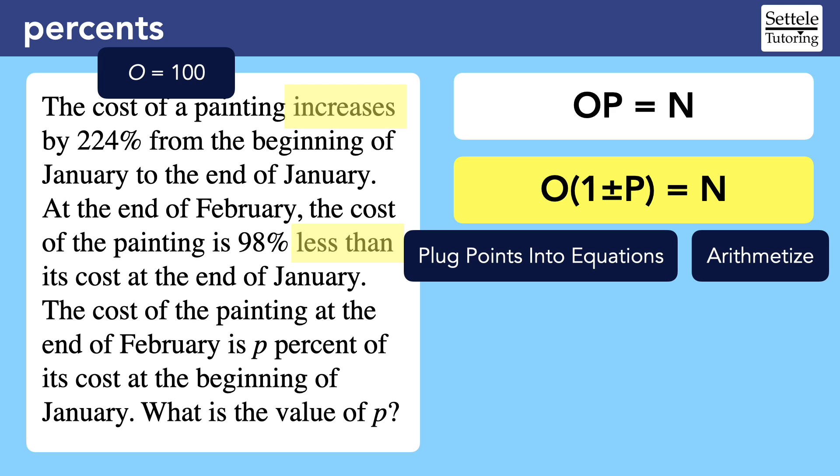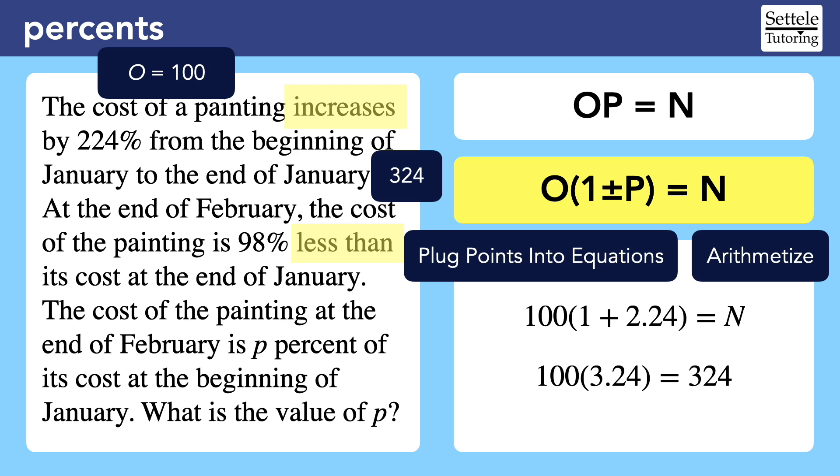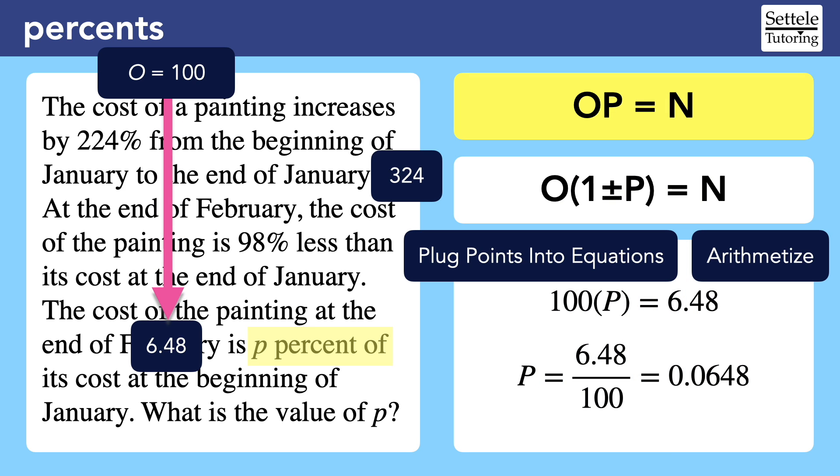If we say this painting originally costs $100, we can substitute into the formula and solve. Notice that we actually end up multiplying by 3.24, even though the increase is 224%. This is another common mistake on percentage questions that is easily avoided by using the correct OP formula. The 1 plus or minus accounts for the fact that we're adding to an original amount, not just finding 224% of the original. Now that we know the cost at the end of January, we have a new original value that we can use for the percent decrease over February. Again, just plug into the formula in the most straightforward way. We find that the final cost of the painting is $6.48. The final step uses the basic OP formula to compare the starting and ending values. The big clue is that the question uses the word of. We can easily plug points into our equation and solve. But remember that the value of P in the OP formulas is the percentage as a decimal. This question wants it as a percentage, so we need to convert by multiplying by 100. So the final answer is 6.48%.